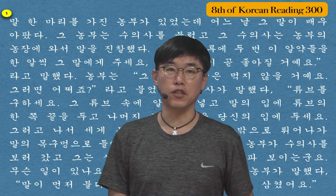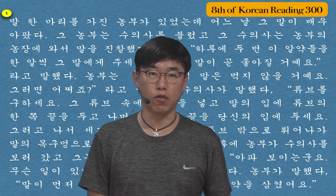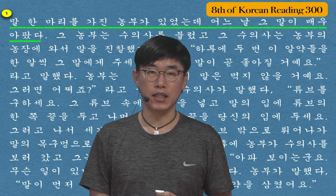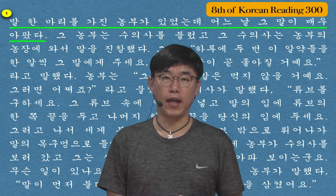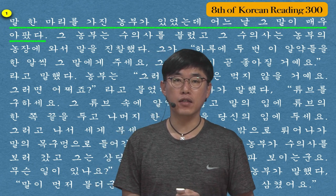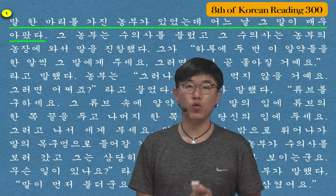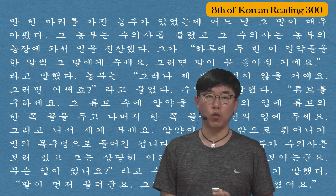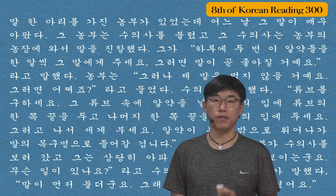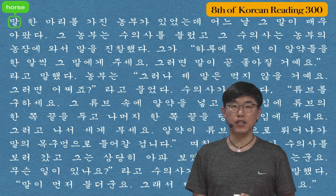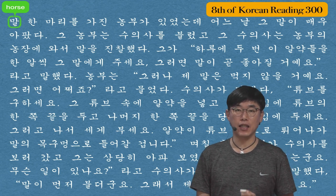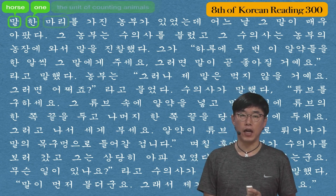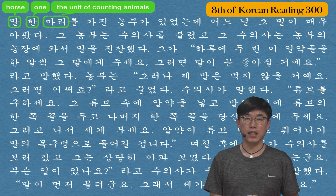Let's start with the first sentence of this paragraph: 말 한 마리를 가진 농부가 있었는데 어느 날 그 말이 매우 아팠다. There was a farmer who had a horse and one day the horse was very sick. 말 is a horse, 한 is one, 마리 is the unit for counting animals, and 를 is the objective case.